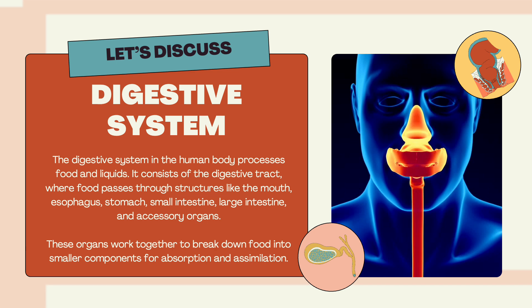The digestive system in the human body processes food and liquids. It consists of the digestive tract, where food passes through structures like the mouth, esophagus, stomach, small intestine, large intestine, and accessory organs. These organs work together to break down food into smaller components for absorption and assimilation.